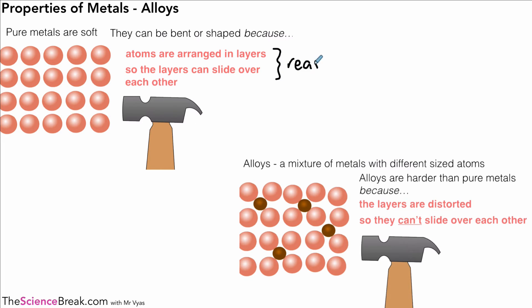So we can summarize that here. We've got pure metals are soft and they can be bent and shaped because, and those are the reasons which we've just discussed and that's talking about pure metals. And then we've got our alloys which is a mixture of metals or which are mixtures of metals with different sized atoms, and they are harder than pure metals because the layers are distorted and they can't slide over each other as we've just discussed.